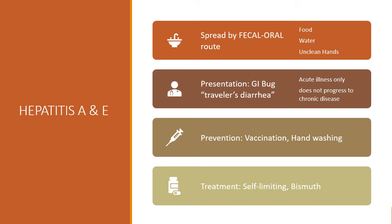Hepatitis A and E both only cause acute illness — they do not progress to chronic disease. Prevention: there is a vaccine for hepatitis A, currently recommended for all infants from the CDC, but for adults who didn't have it as a child, it's typically recommended for traveling. Hand washing is key, and then avoiding potentially contaminated foods and water. When you travel, drink only bottled water, avoid drinks with ice cubes, and be careful of foods washed in local water like salads, because these viruses are only destroyed by chlorine bleach and extremely high temperatures — they're resistant to detergents and acids.